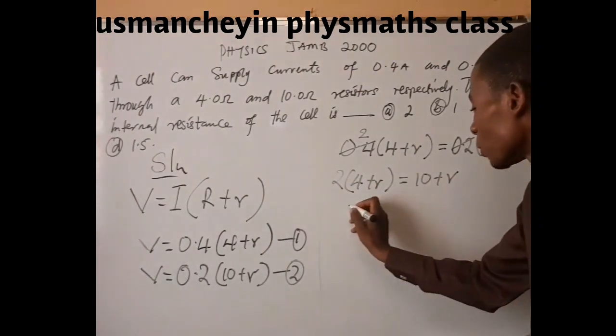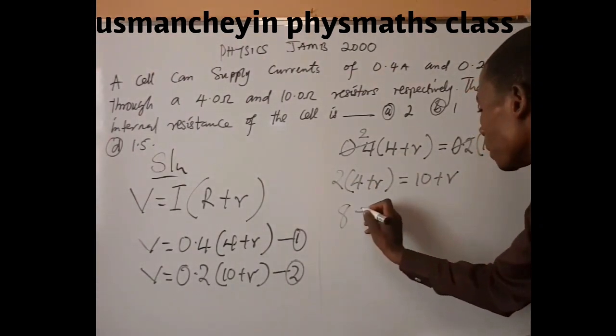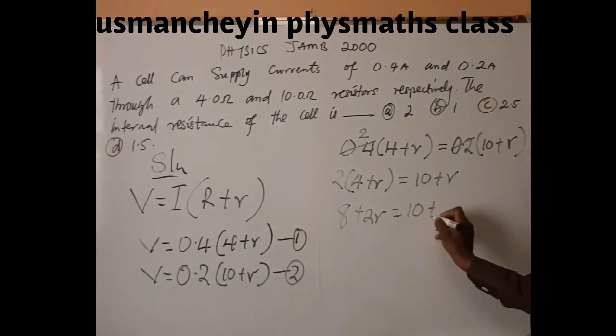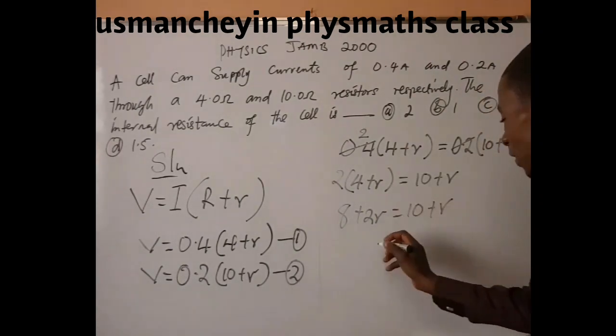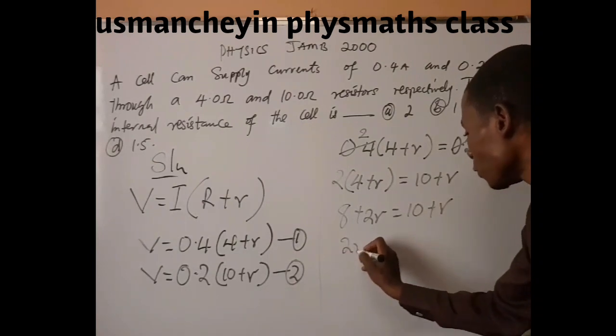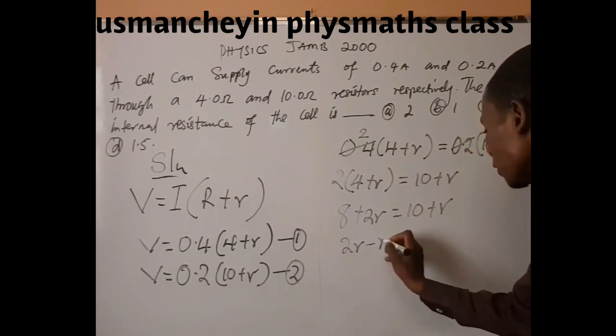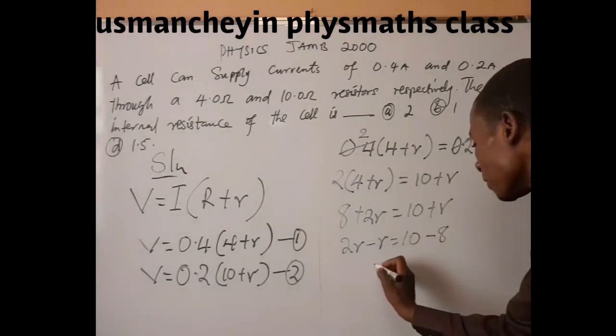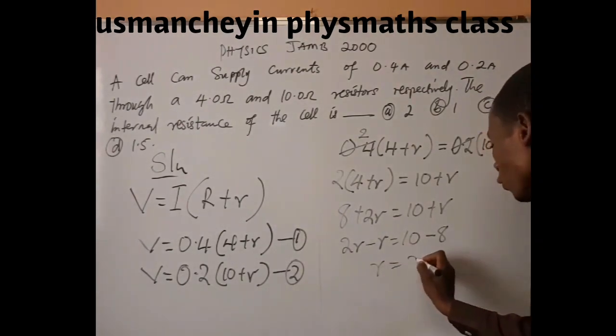Collecting like terms, we have 2R minus R equals 10 minus 8, so that we have R equals 2 ohms.